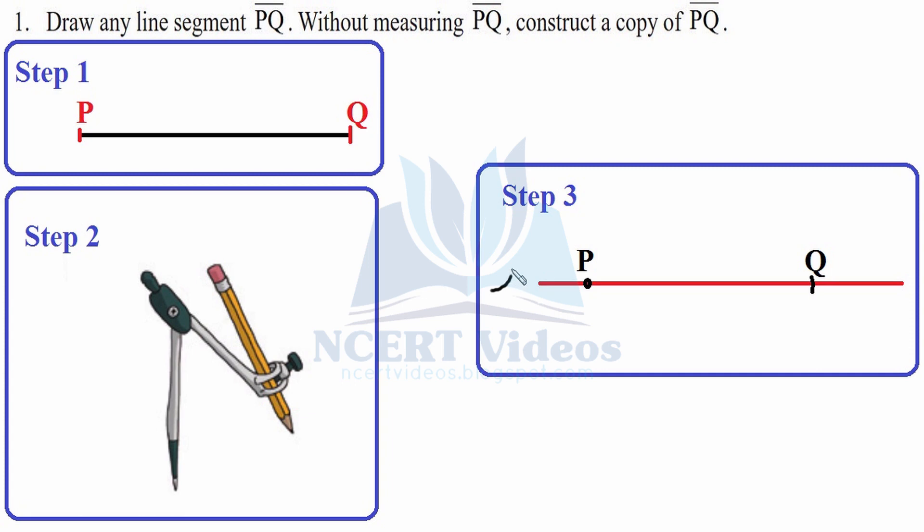Step three: make your line L by assumption, then replace your needle on this line, name it P, and mark an arc. Wherever it comes, that will be your length of PQ.